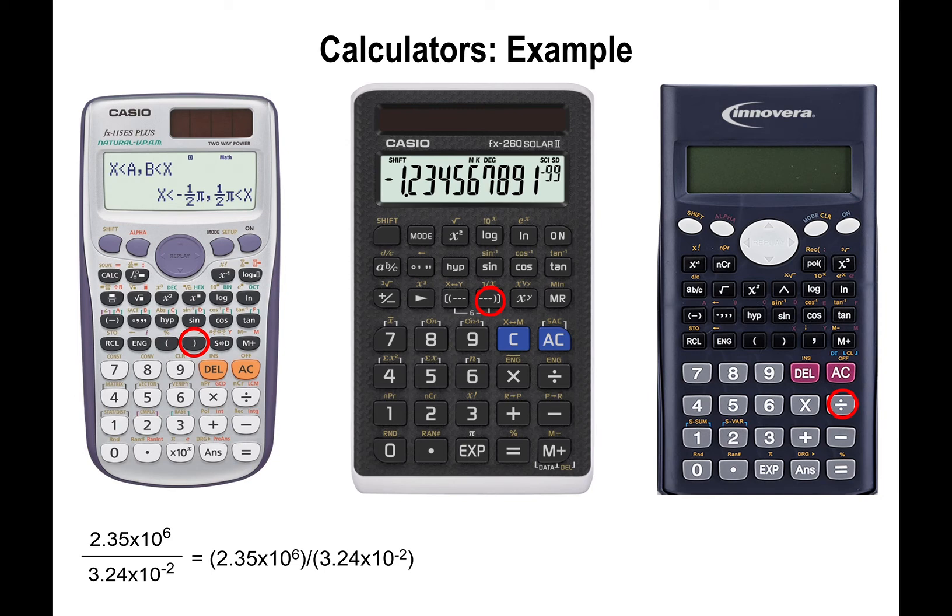Then you close parenthesis and finally press enter or equals. This will give you the answer: 3.09 times 10 to the 7. If you didn't use parentheses, you might still get 3.09, but your exponent is going to be all messed up.